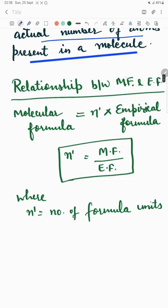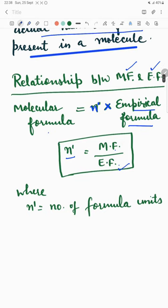Relationship between molecular formula and empirical formula is molecular formula equals N times empirical formula. So, N equals molecular formula upon empirical formula.